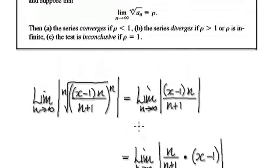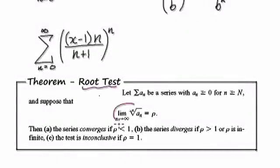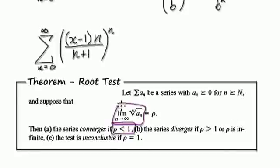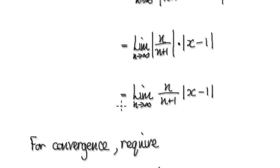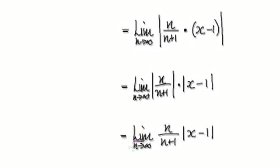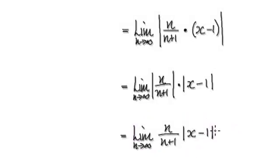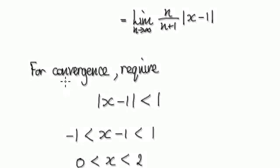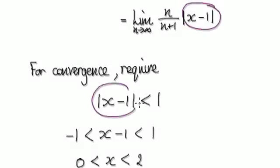Going back to the root test: we always need to compute this limit value. If this value is less than one, the series converges; if it equals one, it's inconclusive. So for convergence, we require this expression to be less than one. As n tends to infinity, this part tends to one, so we just need the remaining factor to be less than one.